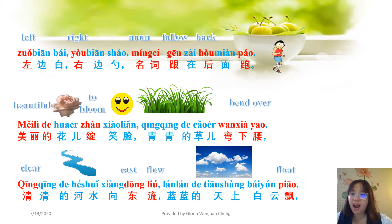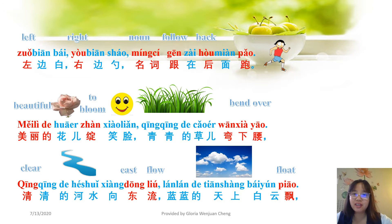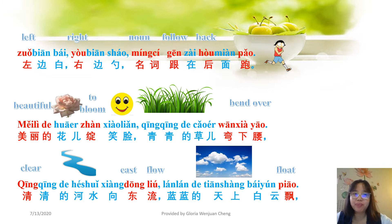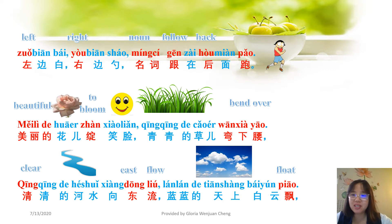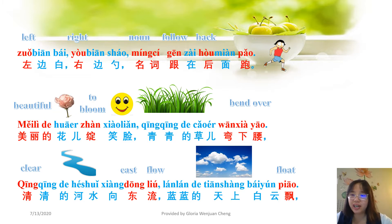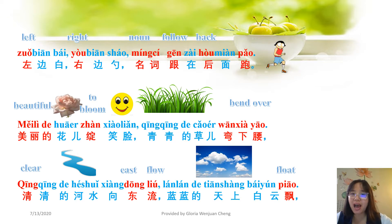Examples of 白勺的: 美丽的花儿, 占笑脸 — here 美丽的 is an adjective meaning 'beautiful', 花 is a noun meaning 'flower'. 笑脸 means 'smiling face', 站 means 'to bloom'. 轻轻的草儿, 弯下腰 — 轻轻的 is an adjective, 草儿 is a noun meaning 'grass', 弯下腰 means 'bends down' (wind over).